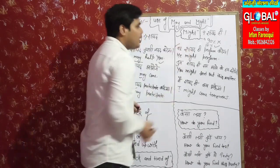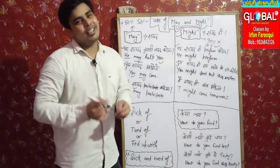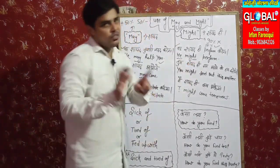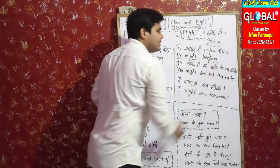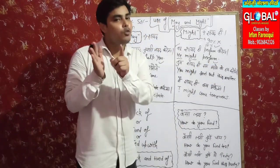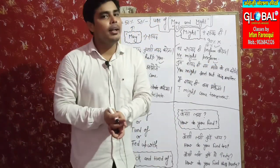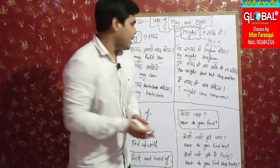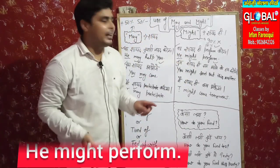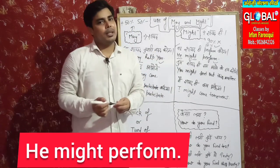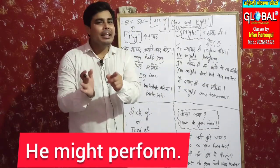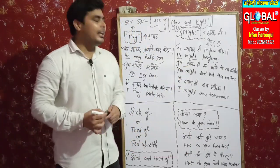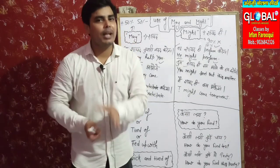Let's look at the board sentences for 'might.' First: 'Woh shayad hi perform karega' — He might perform. The verb comes in its first form here too. These are easy sentences but very commonly used, so kindly watch till the end. So: 'He might perform.'